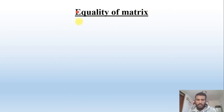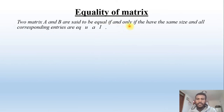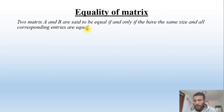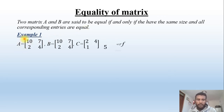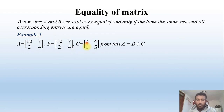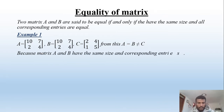The other main topic is equality of matrices. Two matrices are said to be equal if and only if they have the same size and all corresponding entries are equal. For example, matrix A = [10, 2; 7, 4] and matrix B = [10, 2; 7, 4] are equal, but matrix C = [2, 1; 4, 5] is not equal to B because they do not have the same corresponding entries.